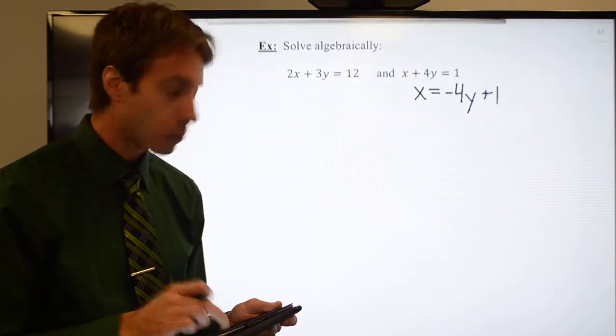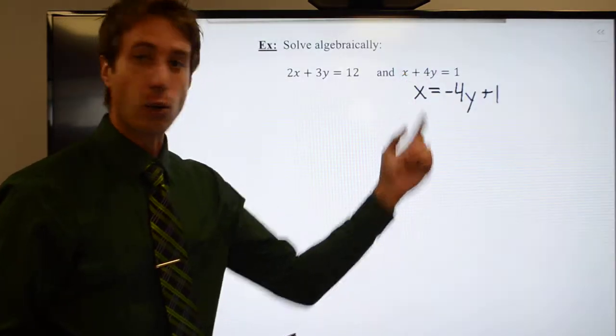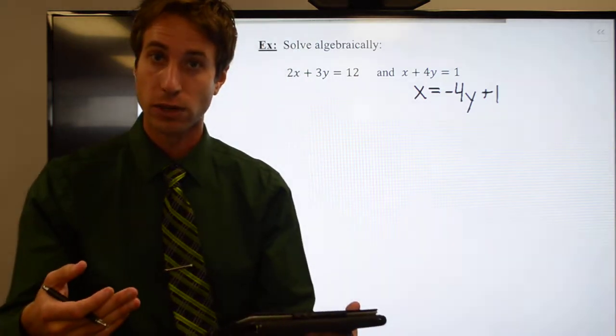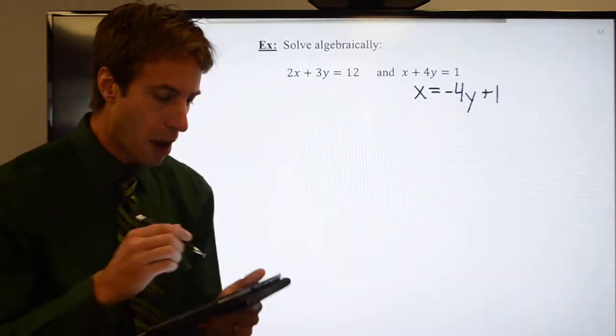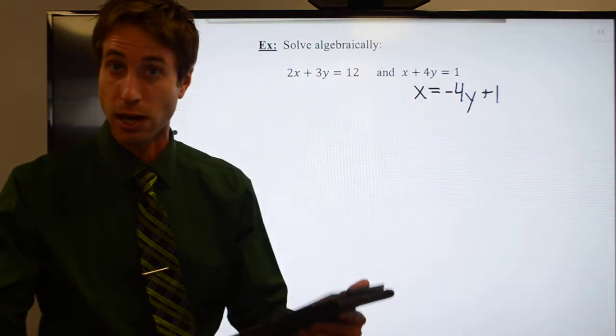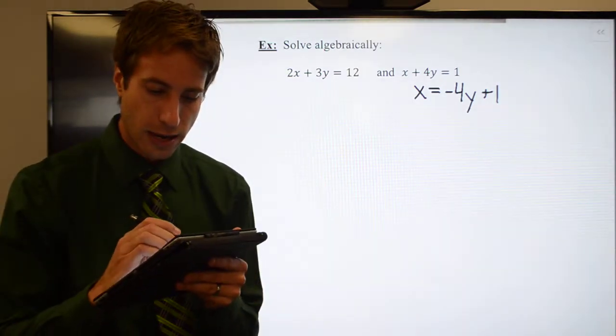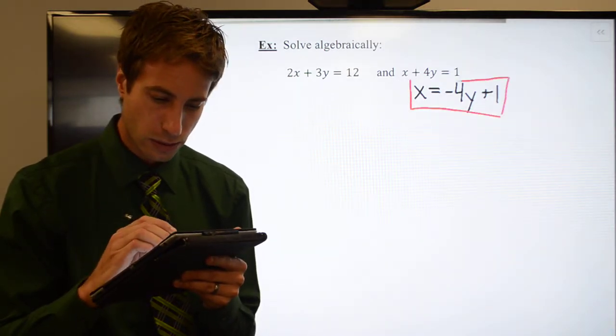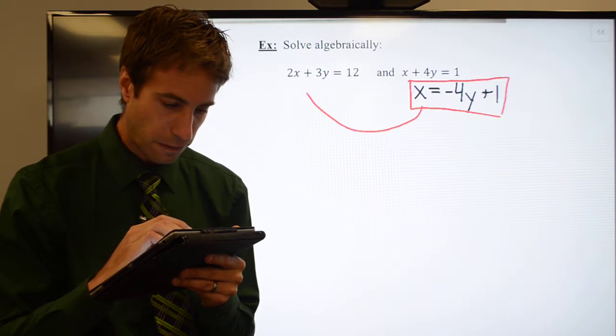So let's go ahead and keep going then with how this method works. Well, what I've done is I've already recognized that my equation, the x variable, had a coefficient of one, and I solved for that variable. But what you're then going to do, and this is where the substitution comes in, the name.